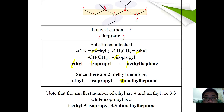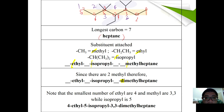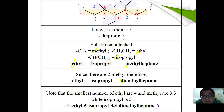For numbering, reading from right to left gives: 4-ethyl, 5-isopropyl, 3,3-dimethyl. Reading from left to right gives: 4-ethyl, 3-isopropyl, 5,5-dimethyl. Comparing the two sets, {4,5,3,3} is lower than {4,3,5,5}, so the correct full name of this compound is 4-ethyl-5-isopropyl-3,3-dimethylheptane.